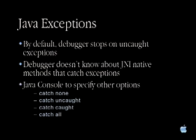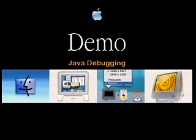Our debugger does a few things to handle Java exceptions nicely. By default we stop when an exception is thrown that is not caught in your code. However, sometimes there's native code written in C that catches exceptions — the debugger has no way to determine that ahead of time, so you might stop in a few surprising places. There's a GDB-like console inside Project Builder's Java debugger with a few commands that help you manage exceptions while debugging.